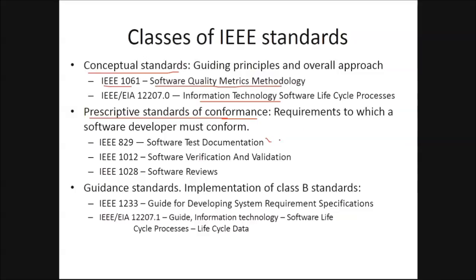Then we have prescriptive standards for conformance — that is requirements to which the software developer must conform. That is IEEE 829 for software test documentation, IEEE 1012 for software validation and verification, and IEEE 1028 for software reviews. So we are going to see a few of them.